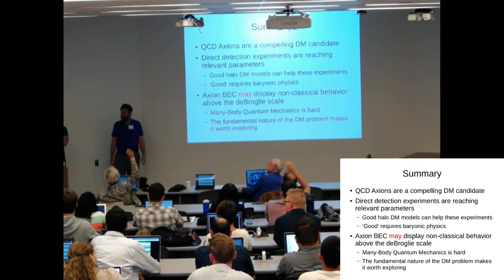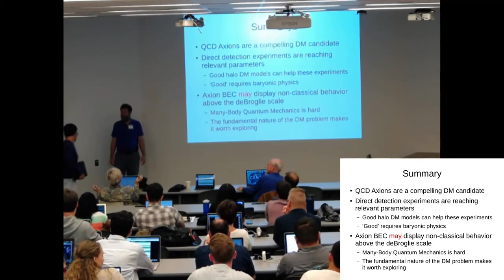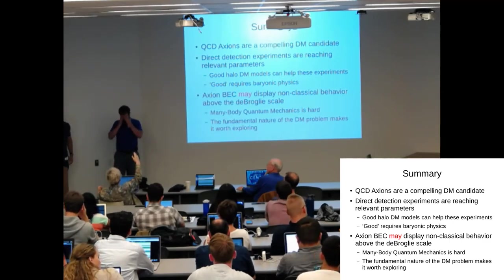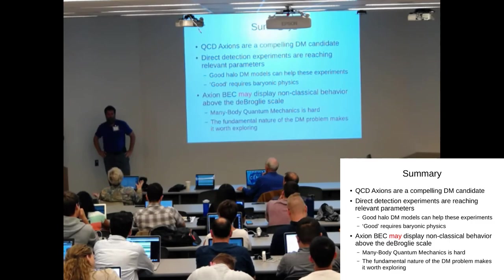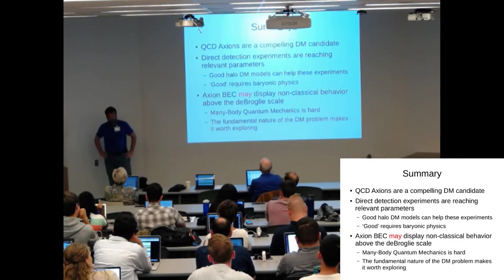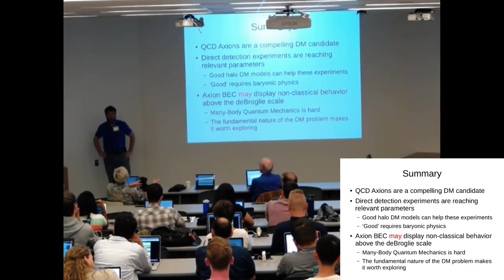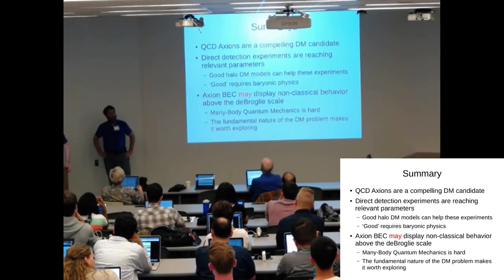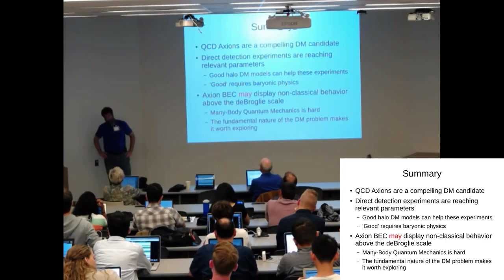Question: there seem to be degrees of possible correlations - more correlated and less correlated curves were shown. What would influence the amount of correlations? The fraction of axions in the ground state - how much of a condensate, how condensed. What influences that has to do with the physics of the phase transition - how the axions are produced.